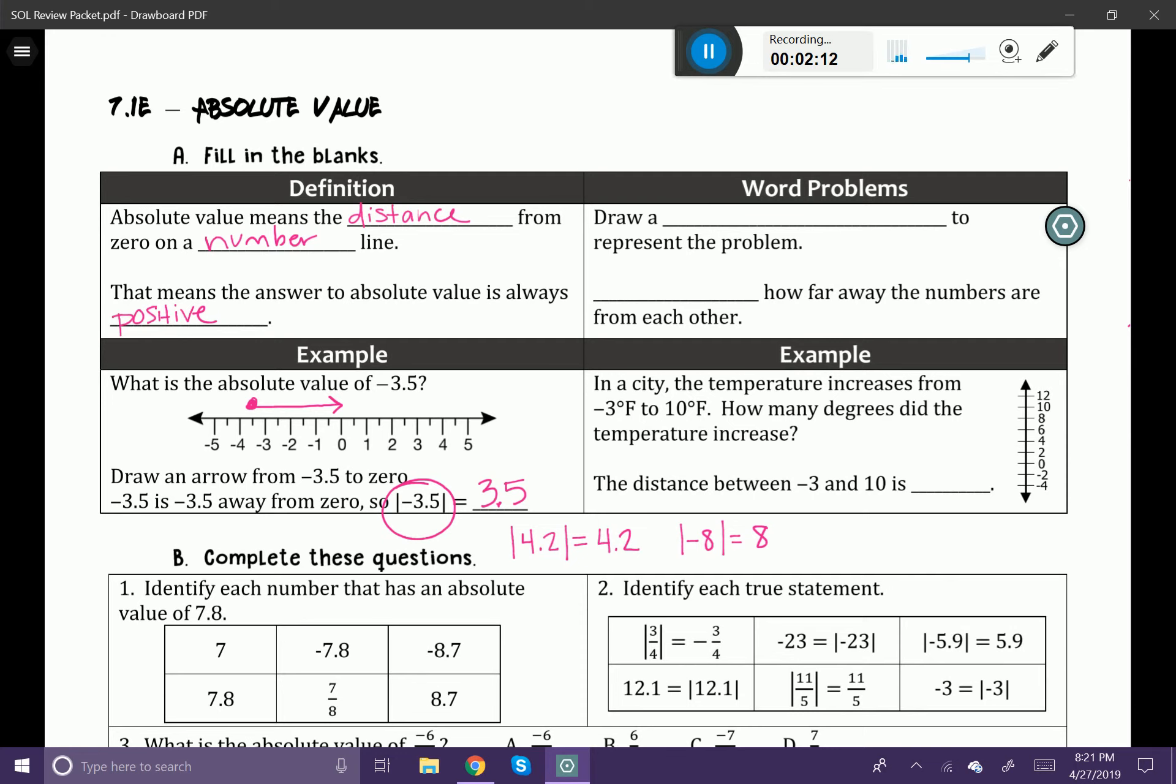All right, now let's go ahead and just talk a little bit about word problems. Over here on the right it says draw a number line to represent the problem. That's always what you want to do first whenever you have a word problem with absolute value.